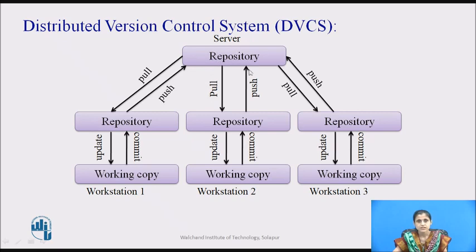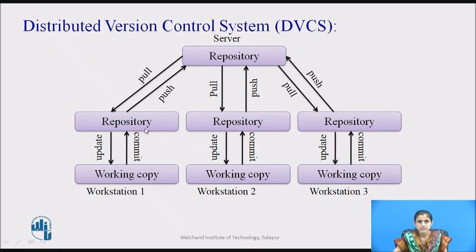This diagram represents a distributed version control system. This is the server where there is a remote repository, and these are the local repositories. These are the working copies of every workstation. When you push changes from the local repository to the remote repository, you use the git push command. To pull changes from the remote repository to the local repository, you use the git pull command. To commit changes from the working directory to your local repository, you use commits. You only need to be online when pushing to or pulling from the remote repository.